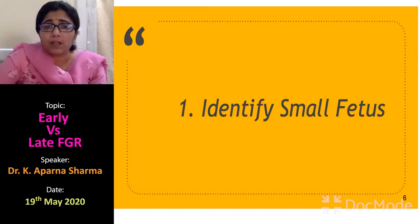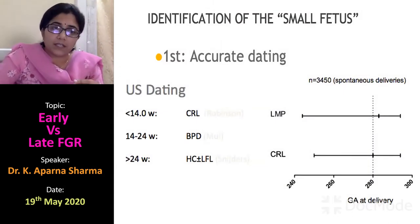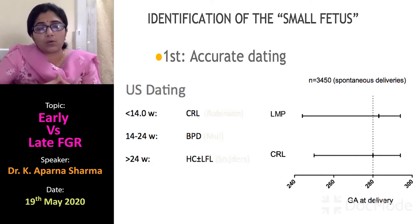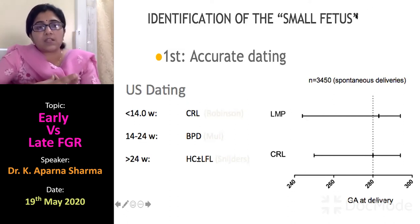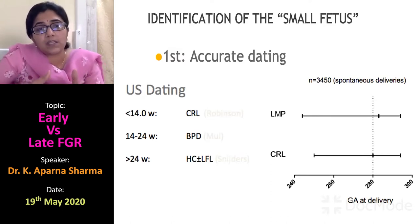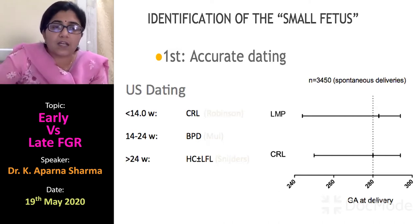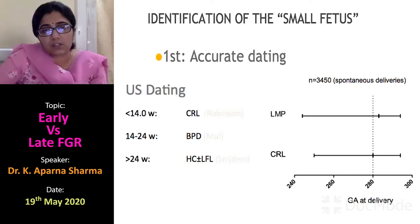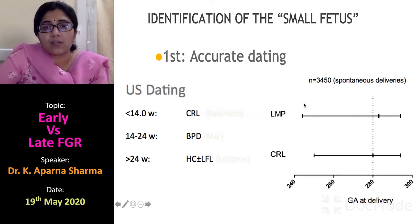The first step — identifying a small fetus — requires accurate dating, which should be done from the first trimester ultrasound. An ultrasound done before 14 weeks has maximum sensitivity for accurate dating. When the CRL and LMP correspond to less than seven days' discrepancy, we are most accurate in dating. This is most important for later assessment of growth, to understand whether there are wrong dates or an actual growth restriction.